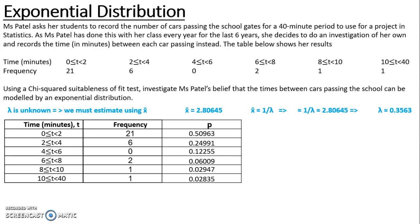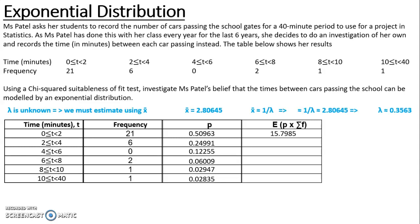Now I have my probabilities using the exponential distribution with the lambda I've estimated, I can work out the expected values. My expected value is the probability using the distribution times by the total frequency. If I add up the frequencies for this example, I get 31, so I'm going to multiply each of those probabilities by 31.